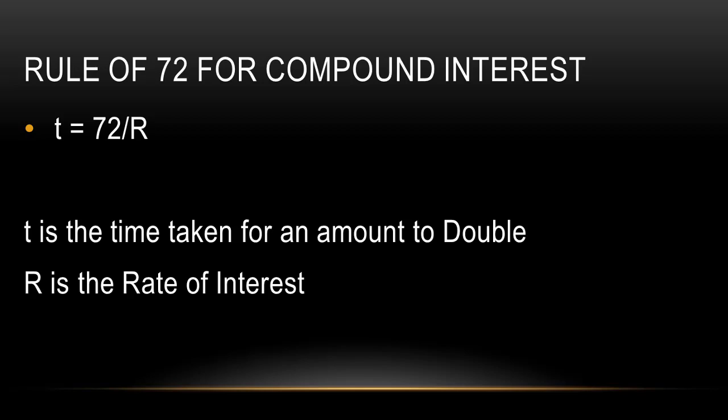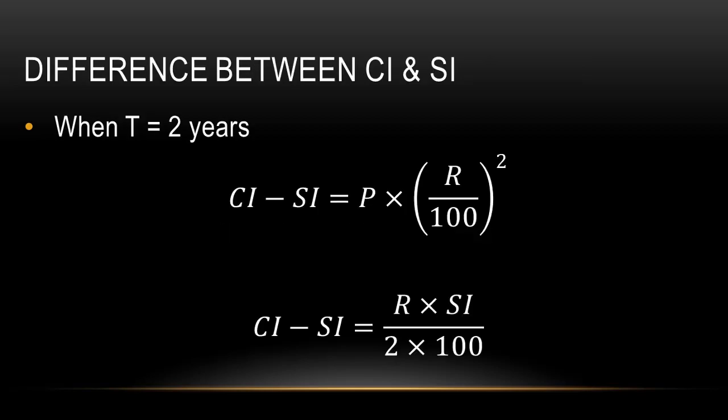For example, if the rate of interest is 10%, then the time taken for the amount to double will be 72 / 10, which is 7.2 years.